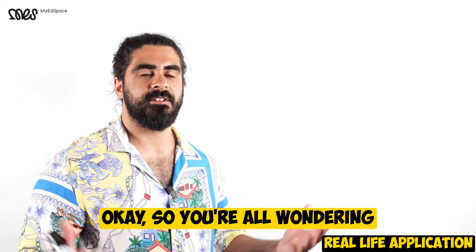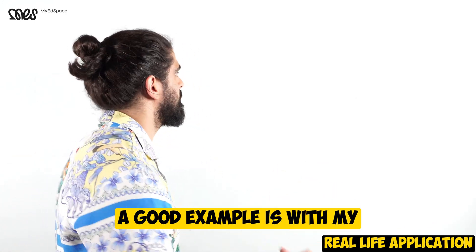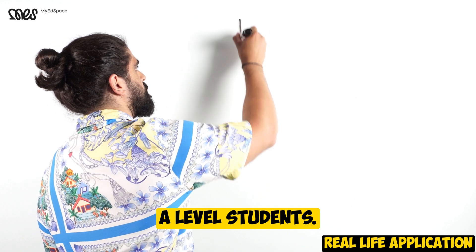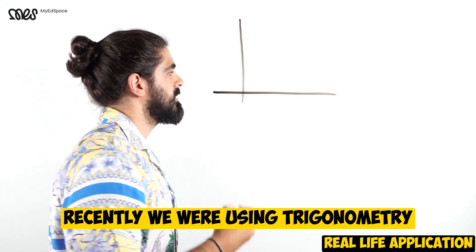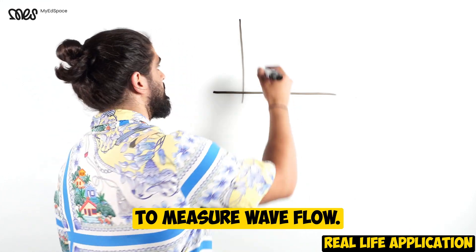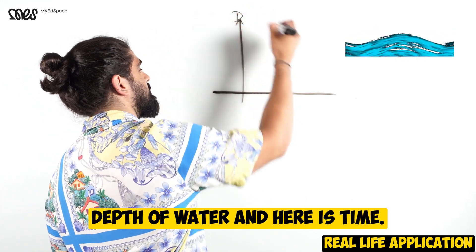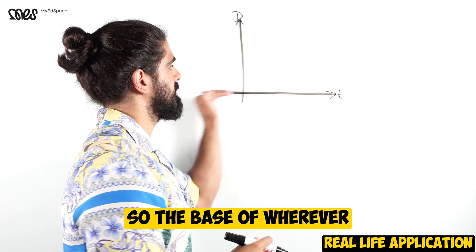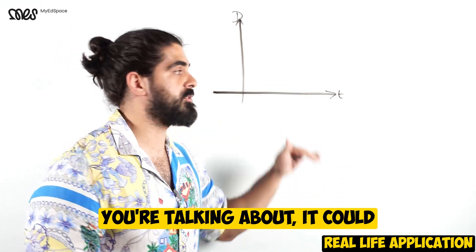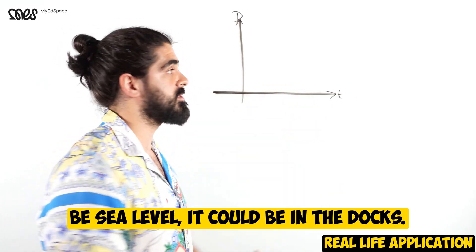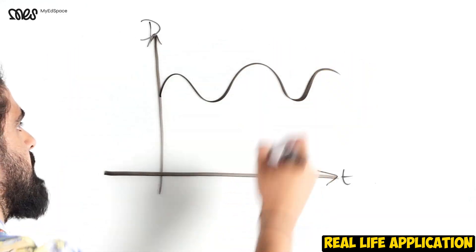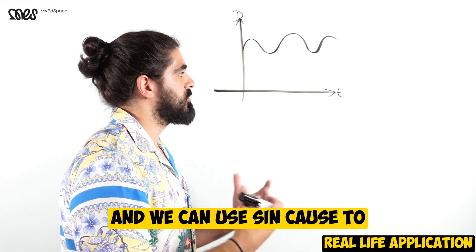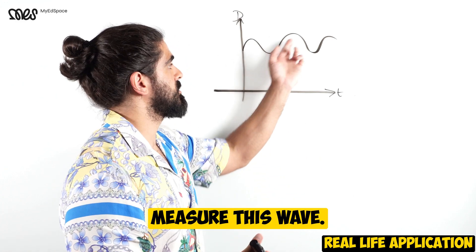So you're all wondering, where can we use trigonometry? A good example is with my A-level students recently, we were using trigonometry to measure wave flow. Here would be my depth of water, and here is time. This is my base - it could be sea level, it could be in the docks - and here are my waves. We can use sine and cos to measure this wave.